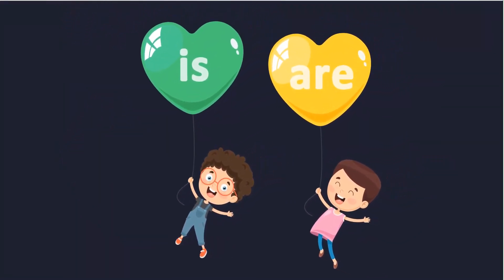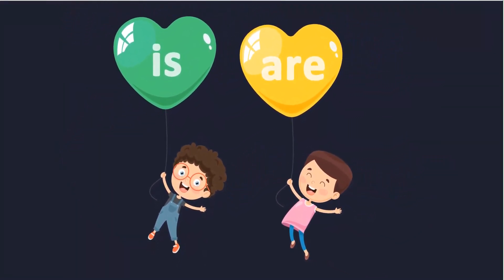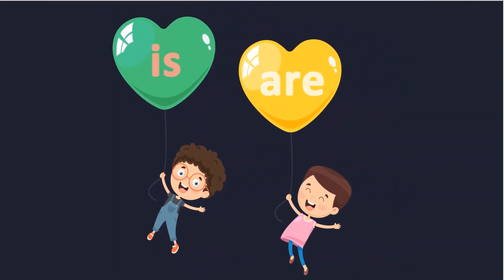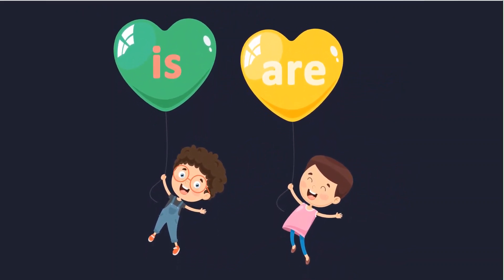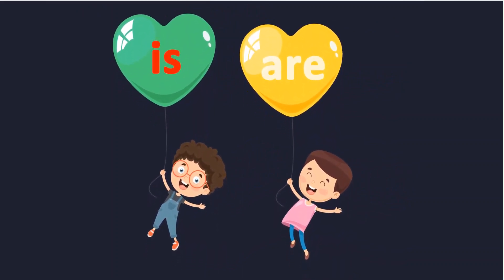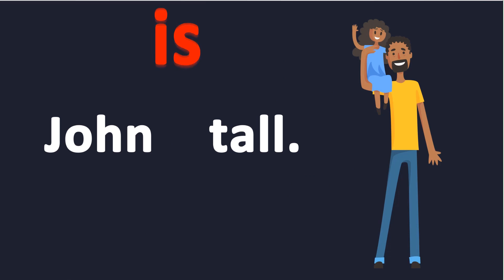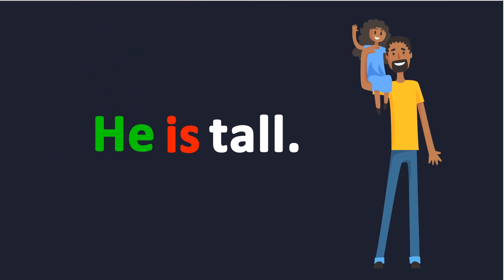Now look at the second balloon. It has the word is. Let's learn how we can use it. John is tall. John is a name of a man. Can we replace John with a pronoun? Of course, yes! We can say he is tall. We use the verb is with the pronoun he.